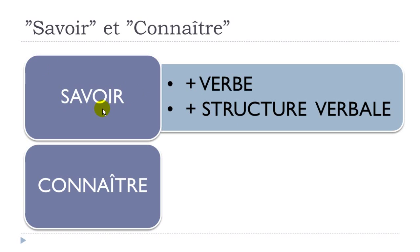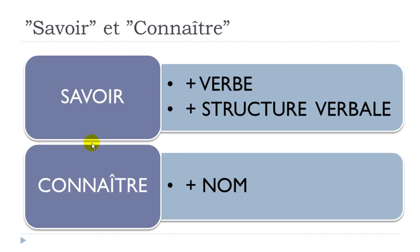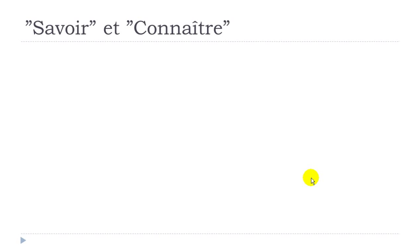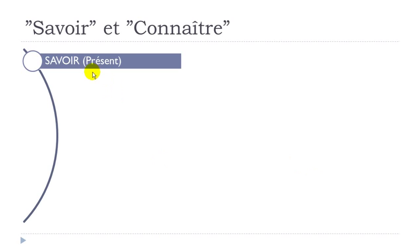Connaître has the same meaning — 'to know' — but you will use Connaître only if you want to put a name or a noun after it. That's the main difference: Connaître plus a noun ('avec un nom'), and Savoir with a verb or a sentence.